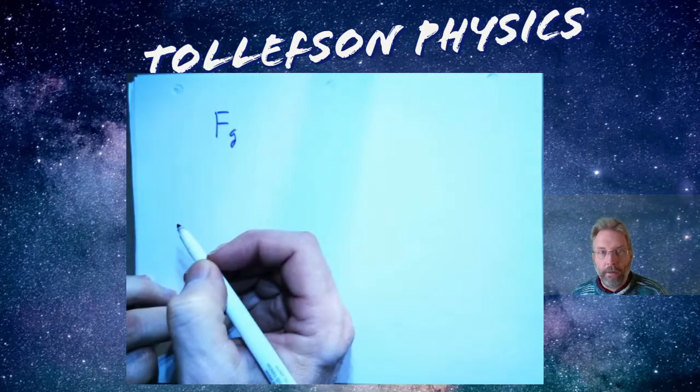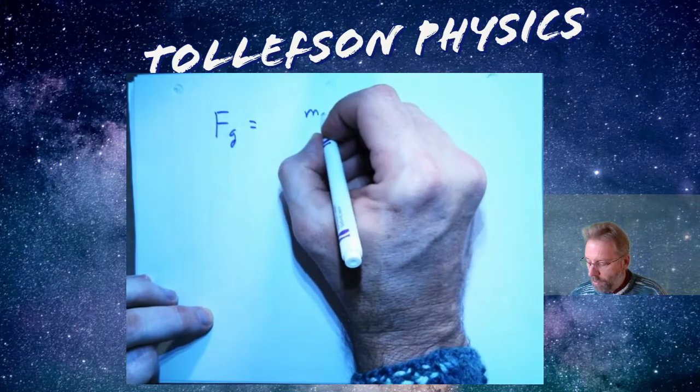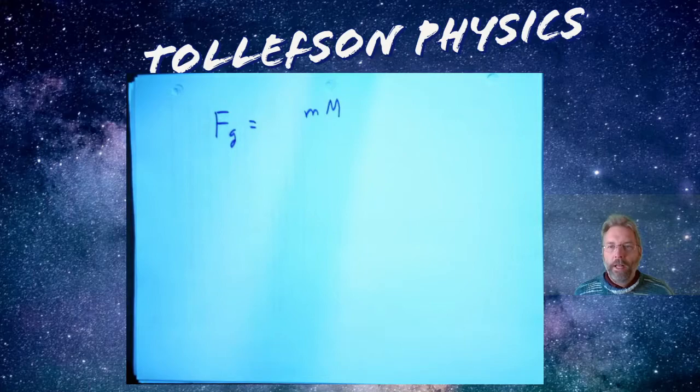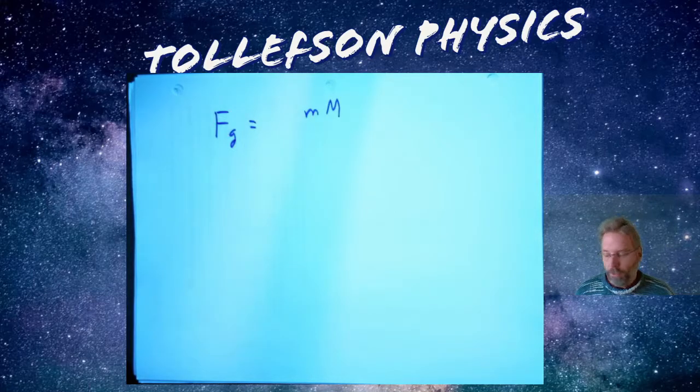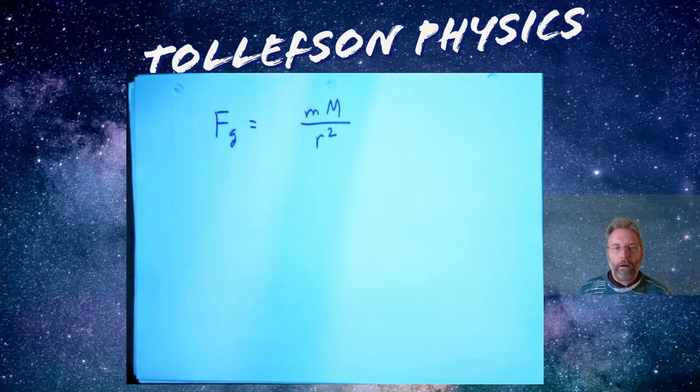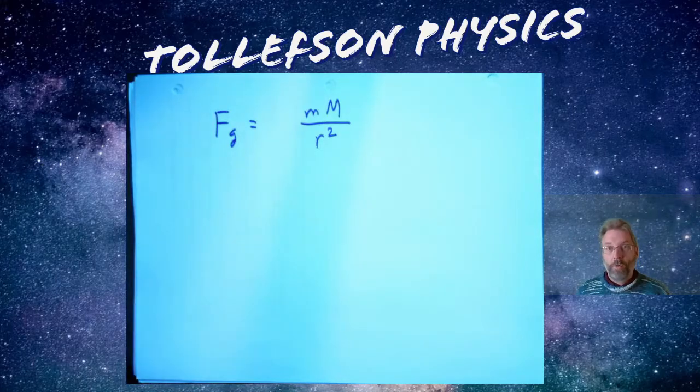Force due to gravity is based upon the mass of those objects, and it also depends upon the distance that those objects are apart, signified by r squared. Distance really matters - it's a squared function.